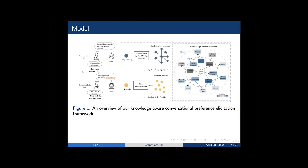Here is an overview of our system, which consists of three key components. The first key component is item recommender and second key component is a graph-based optimal design module. The third key component of our system is the pseudo-graph feedback module. We will introduce these three components later.